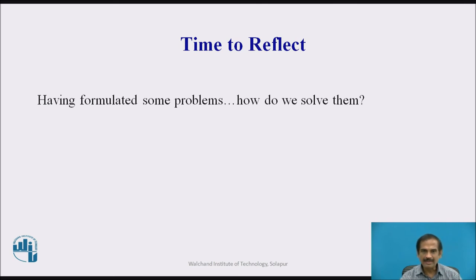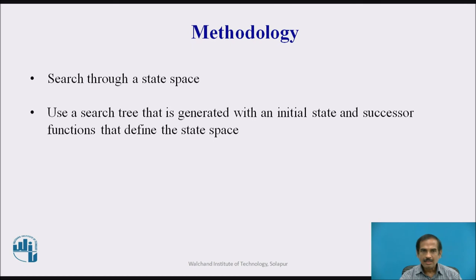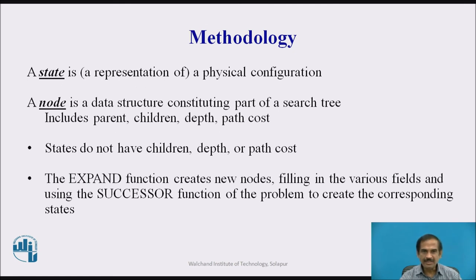Having formulated some problems, how do we solve them? We search through a state space using a search tree generated with the initial state and the successor functions to define the state space. A state is a representation of a physical configuration. A node is a data structure constituting part of the search tree, including children, depth, and path cost. States themselves do not have children, depth, or path cost. We expand functions to create new nodes.